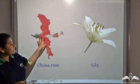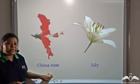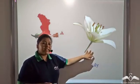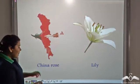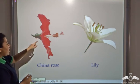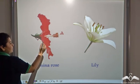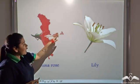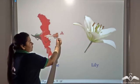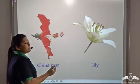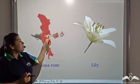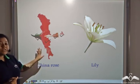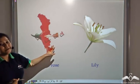This flower is known as the china rose, and this flower is known as a lily. The china rose has all the parts — calyx, corolla, androsium, and gynecium. The androsium and gynecium remain fused in the china rose, but all four whorls are present.